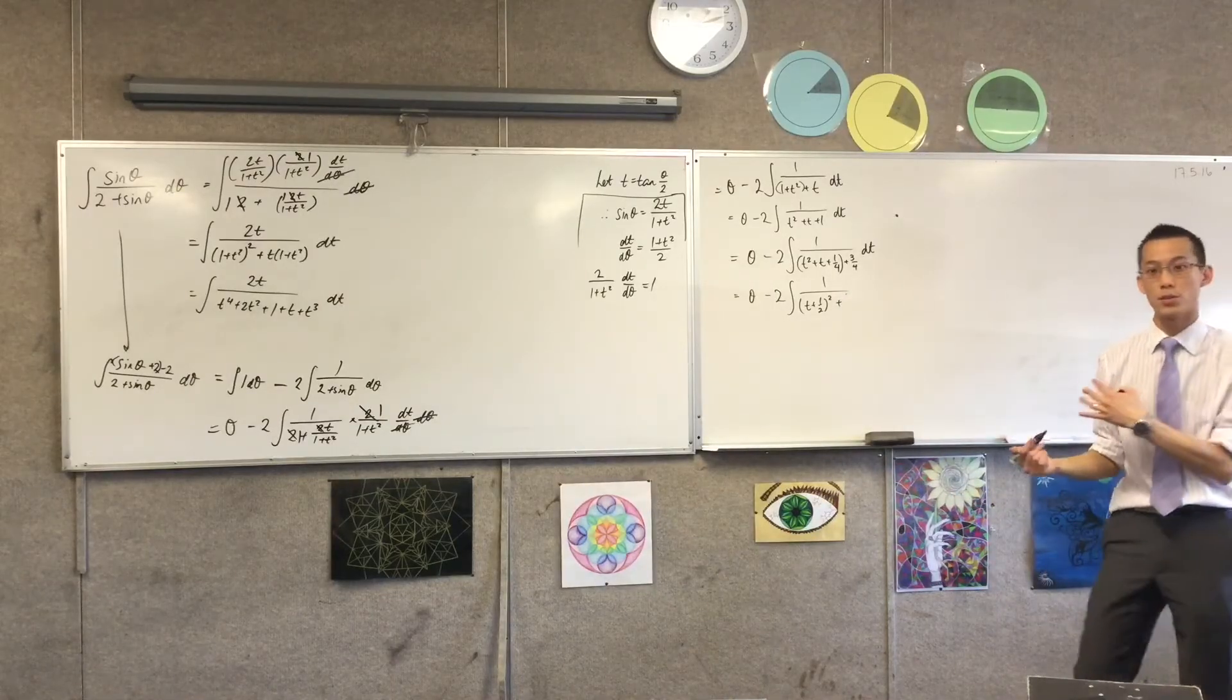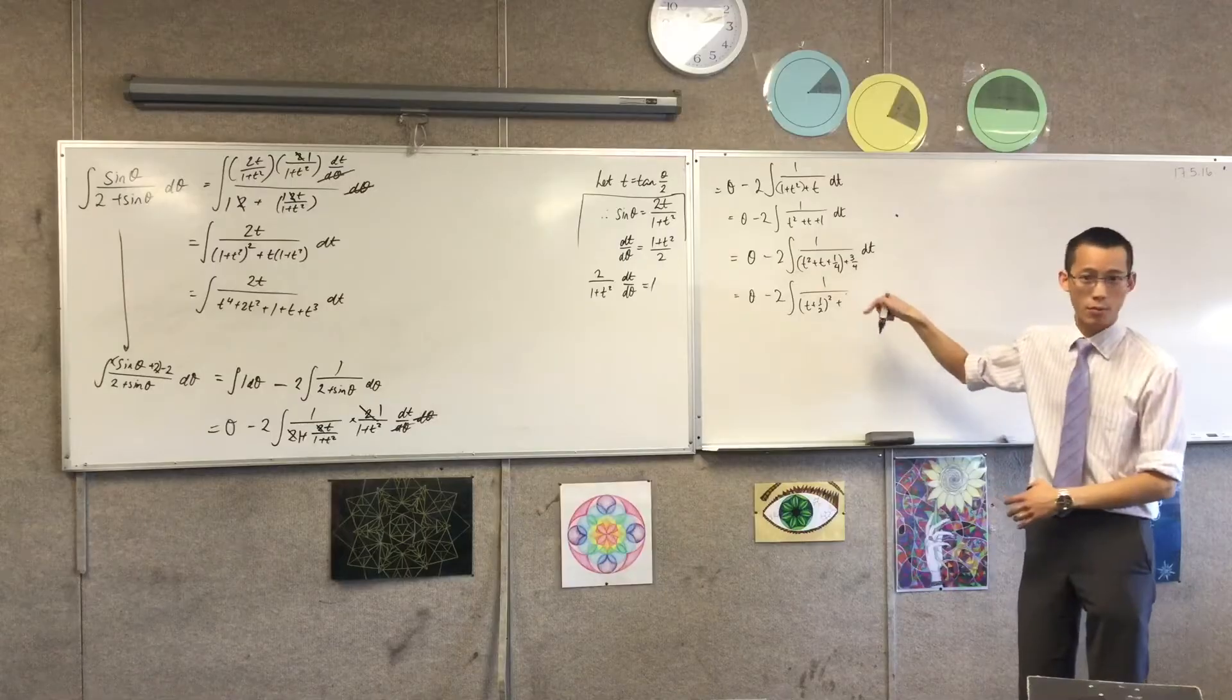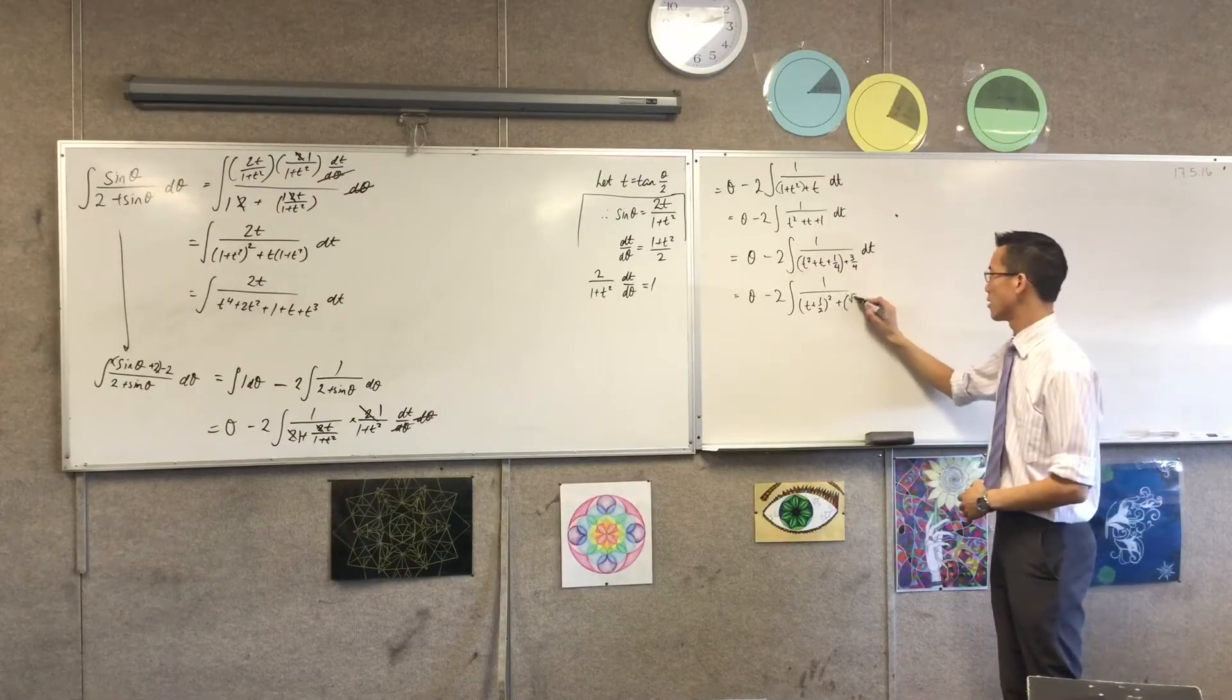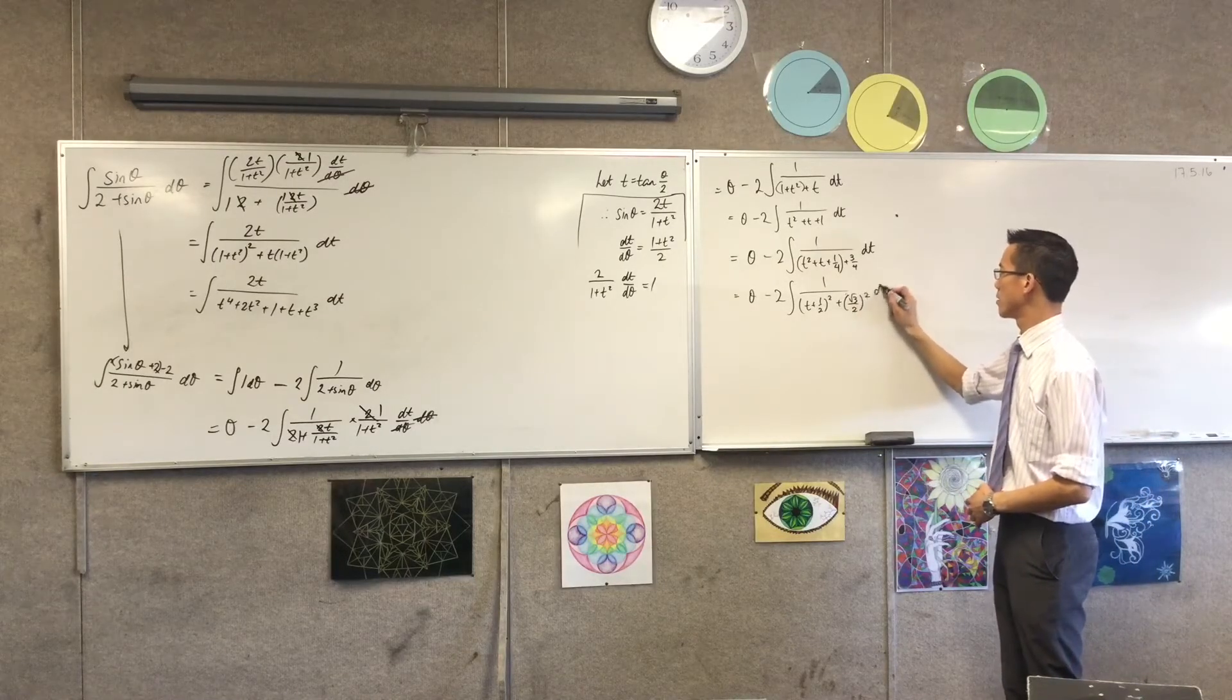Now, that three quarters, I actually will write it in a slightly different way as well. It's also, I want that to be a square too, right? What's the square root of three quarters? Cool.